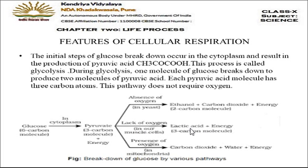Lactic acid is produced in human muscle cells when there is an insufficient supply of oxygen. This happens when we do a lot of exercise: our breathing rate increases, the supply of oxygen becomes insufficient, and at that time the product formed is lactic acid, which causes tiredness and fatigue in the body.